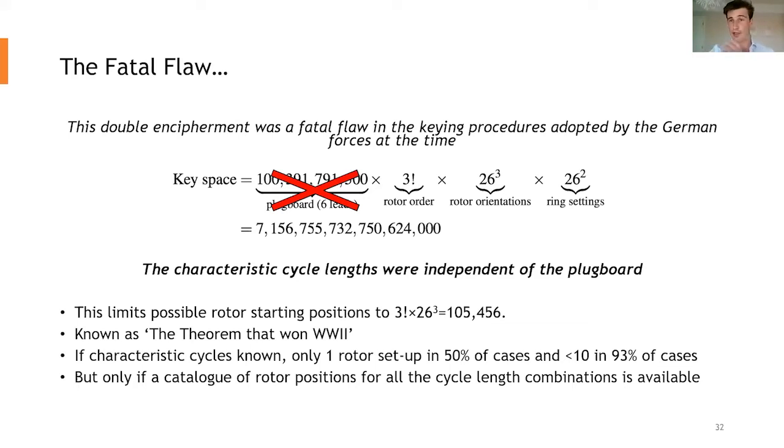Now this completely changes everything. To explain this a little bit, what's happening with the plugboards, the letters are changing, but those cycle lengths are not changing. Now this limits the possible rotor starting positions to just 105,456. In other words, roughly speaking, a third of a yellow page. Now this is sometimes known as, some people deem this as the theorem that won the war. This completely revolutionizes and brings such an enormous number down to something which is now big, but it's manageable.